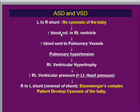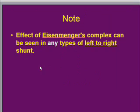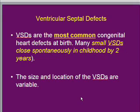Clinically, you would know the patient has developed Eisenmenger complex when a baby who was not previously cyanotic now becomes cyanotic. It is very important to understand that Eisenmenger complex can be seen in any type of left-to-right shunt — it can be seen in ASD, VSD, as well as in patent ductus arteriosus. Two important components of Eisenmenger complex are right ventricular hypertrophy and pulmonary hypertension.